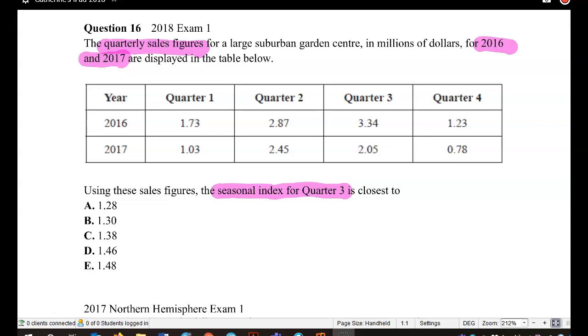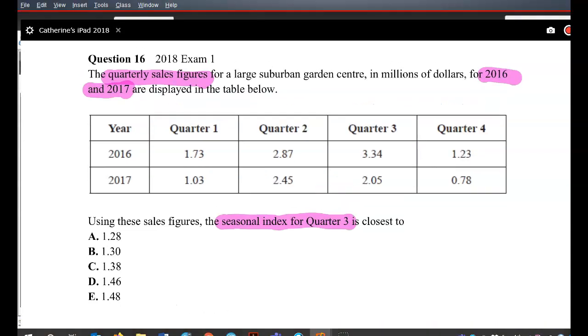Now you've got to remember here that because we have the two years worth of data, we have to use both years to find that seasonal index. Our process is we find the quarterly average for 2016 and the quarterly average for 2017 and use both of them to find the index. So first off, we are going to find the quarterly average for 2016 and then the quarterly average for 2017.